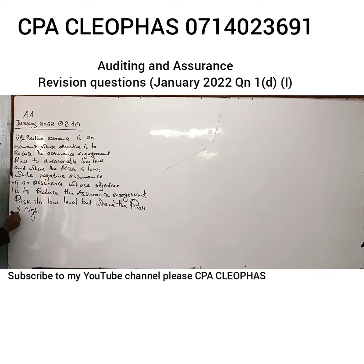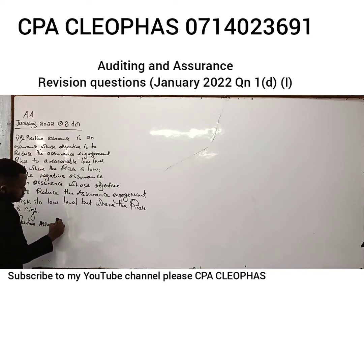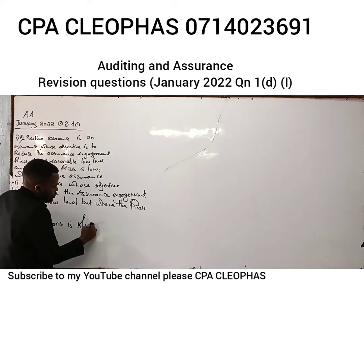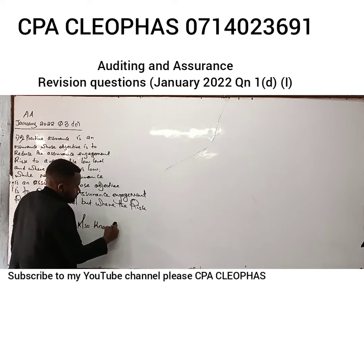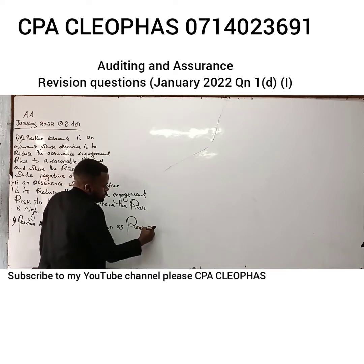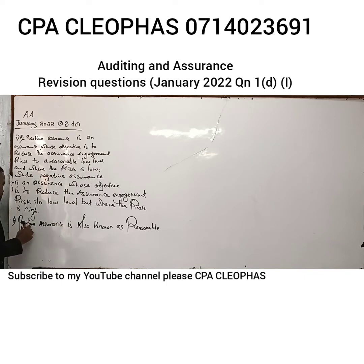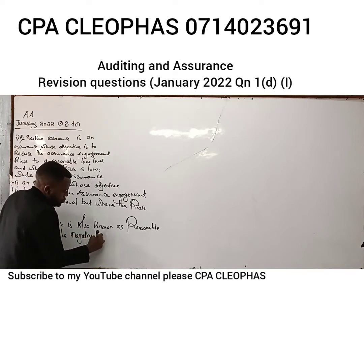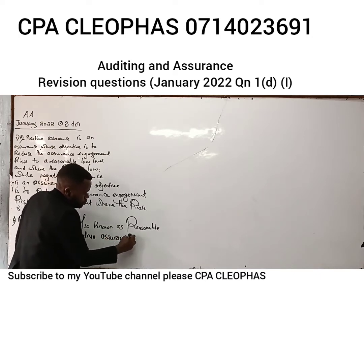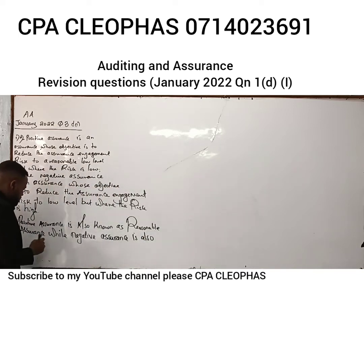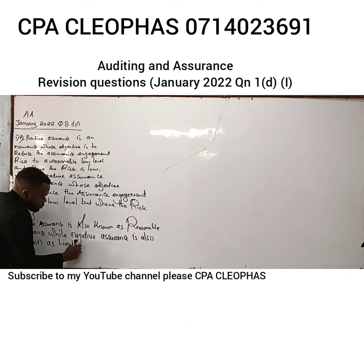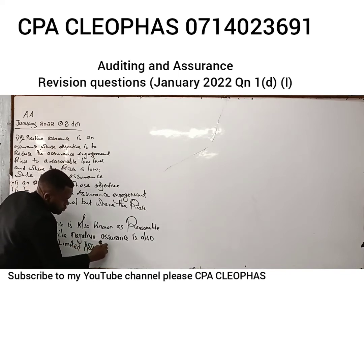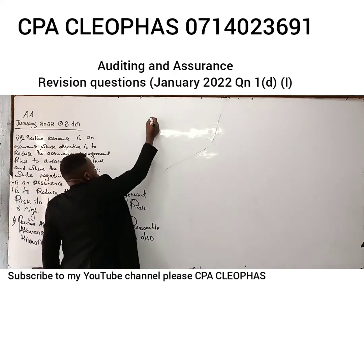Difference number one: positive assurance is also known as reasonable assurance, while negative assurance is also known as limited assurance.